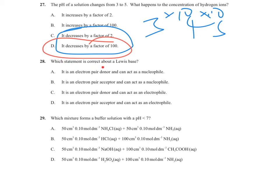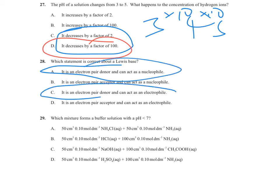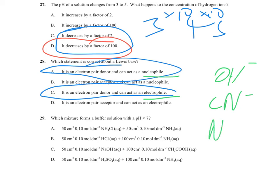Question 28 is a recall question: which statement is correct about a Lewis base? A Lewis base is a substance that donates a pair of electrons — an electron pair donor. An electron pair acceptor would be a Lewis acid. Common nucleophiles such as OH⁻, CN⁻, and NH₃ all have lone pairs of electrons that they donate. Therefore a Lewis base is also a nucleophile — it donates a lone pair of electrons, and the answer is A.